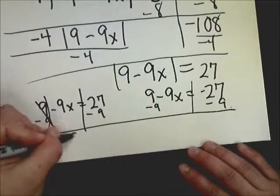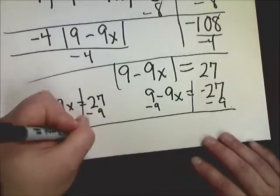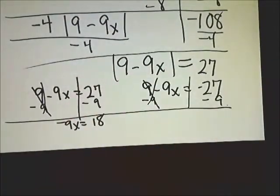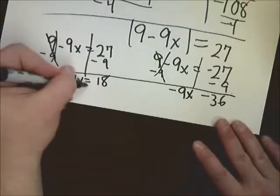It might be easier for you just to do one whole one and then do the other one, but I'm just trying to do it all at one time. So I need to subtract 9 from both sides here. 27 minus 9 is 18. Negative 27 minus 9 is negative 36. I almost said 35 there. Now I need to divide by negative 9.